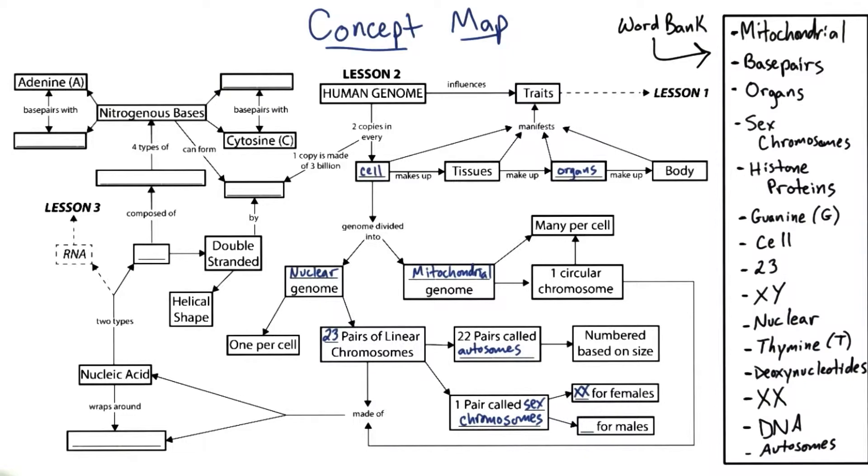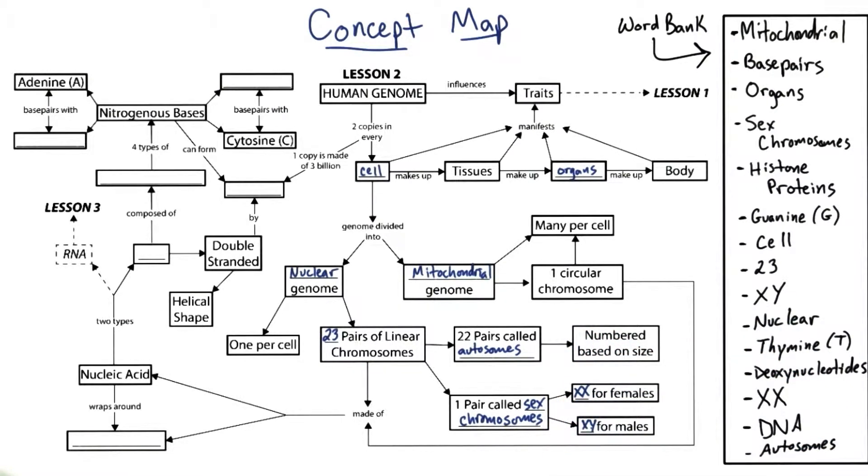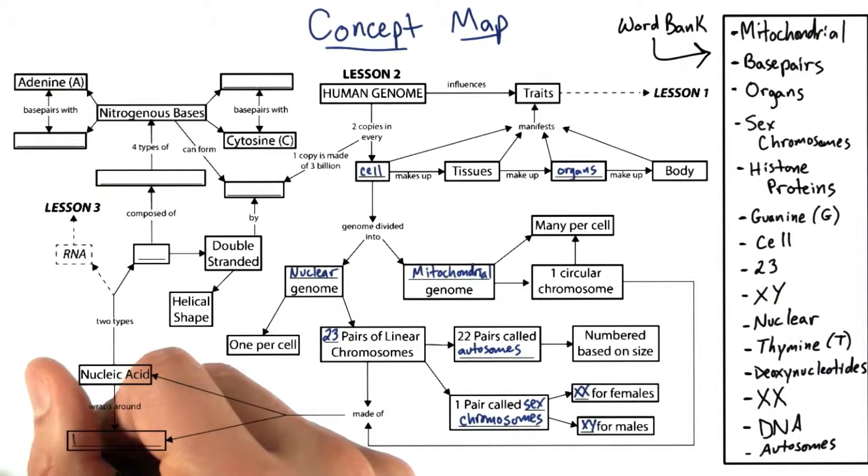Two X chromosomes will develop as a female, and an X and Y chromosome will develop as a male. All chromosomes in a cell are made of nucleic acid wrapped around histone proteins.